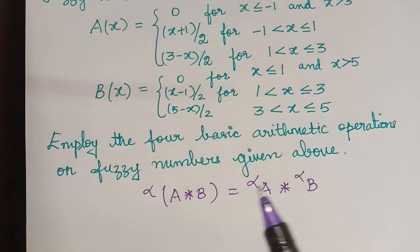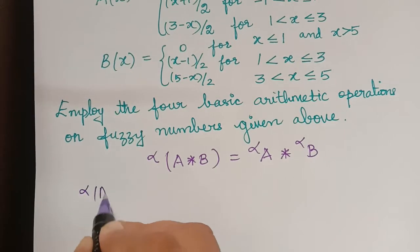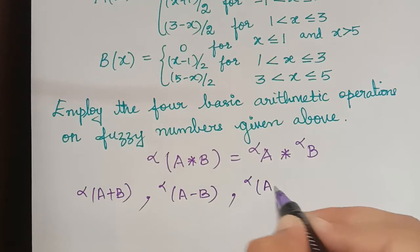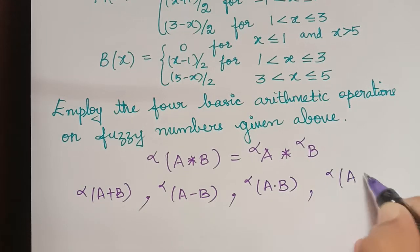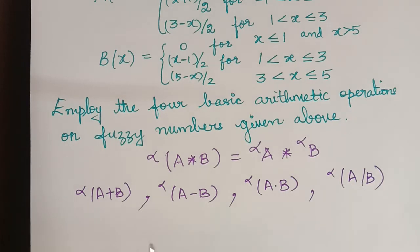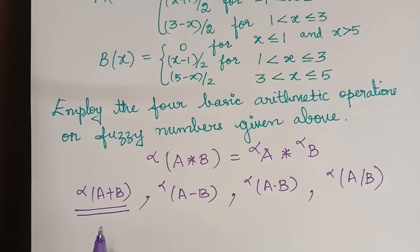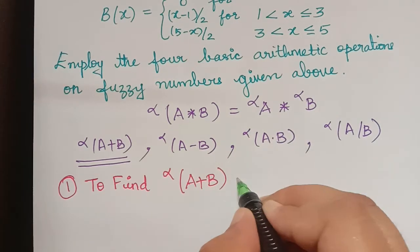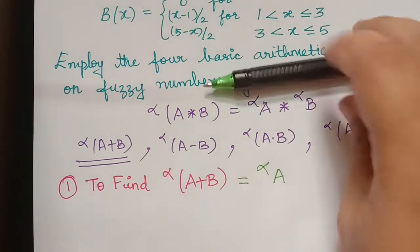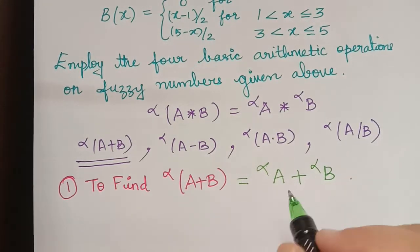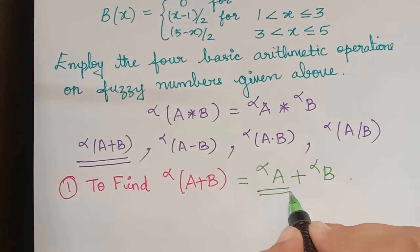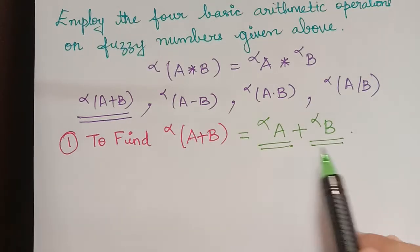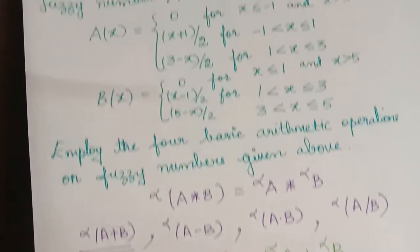Now we shall employ them one by one. First we shall find the alpha cut of A+B, then the alpha cut of A-B, then alpha cut of A×B, and alpha cut of A÷B. So one by one we shall find these now, starting with the alpha cut of A+B.